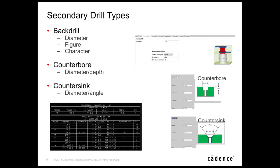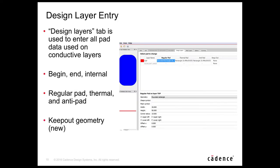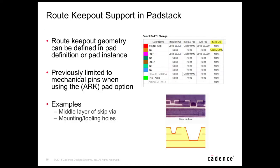The third tab covers secondary drill types, including back drill diameter, figure, and character — to be covered in more depth in an upcoming webinar. Also introduced: counter bore (supporting diameter and depth) and countersink (supporting diameter and angle). The design layer entry tab is where most work is done, defining begin, end, and internal regular pads, thermals, and anti-pads. New here is keep-out geometry in the last column — a transition from 16.6's ARK pad option — now usable on any type of pin, not just mechanical, such as the middle layer of a skip via or mounting and tooling holes.